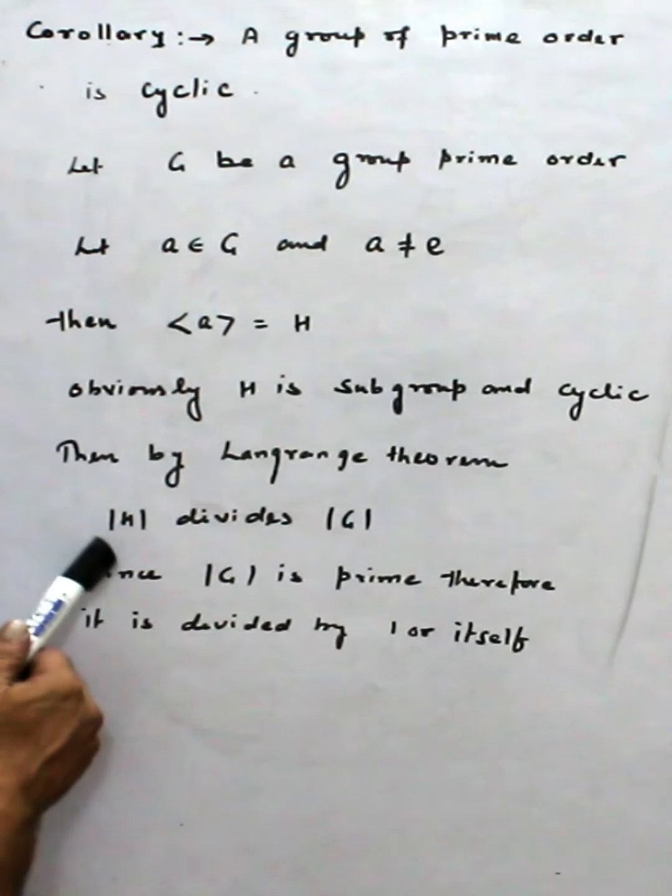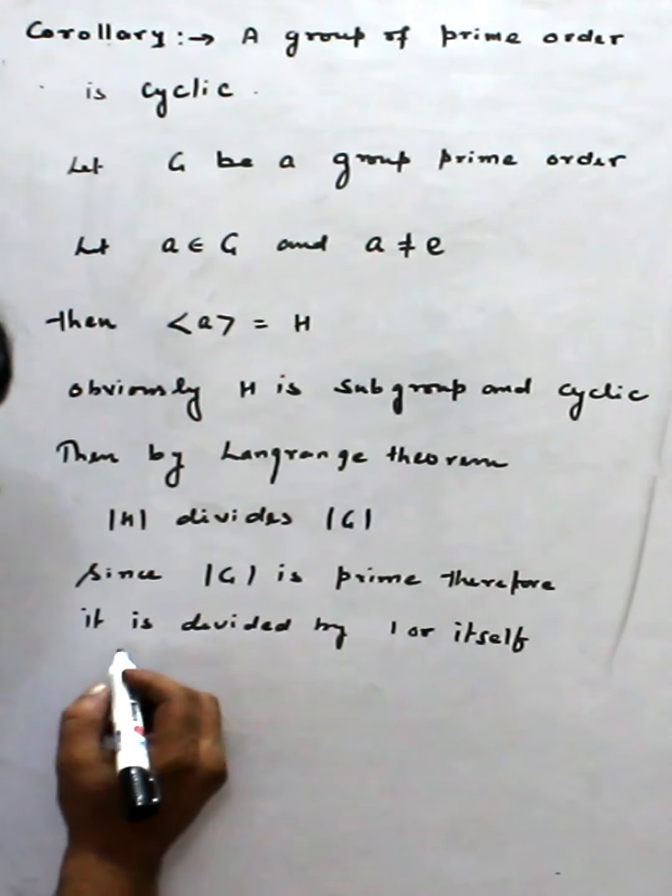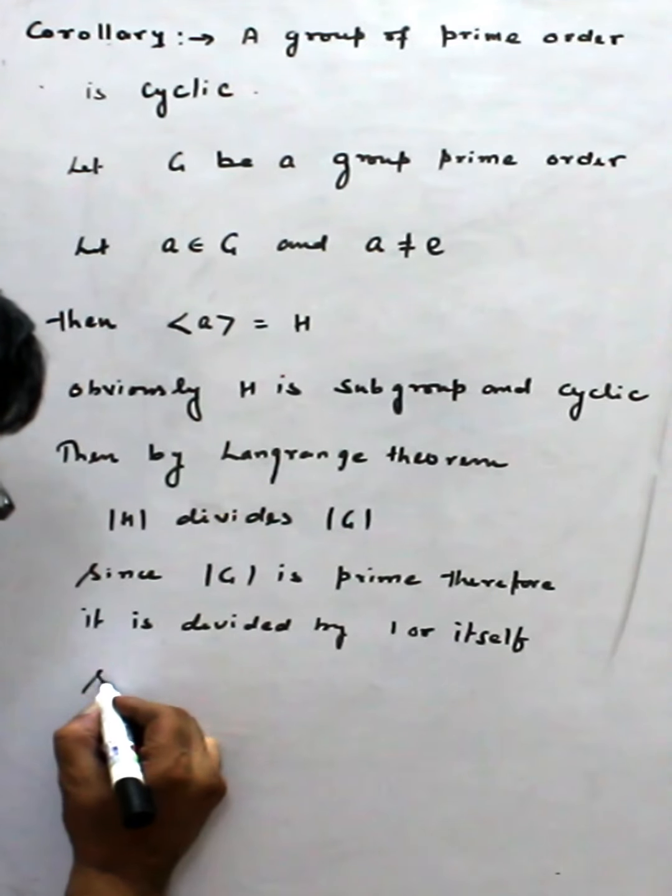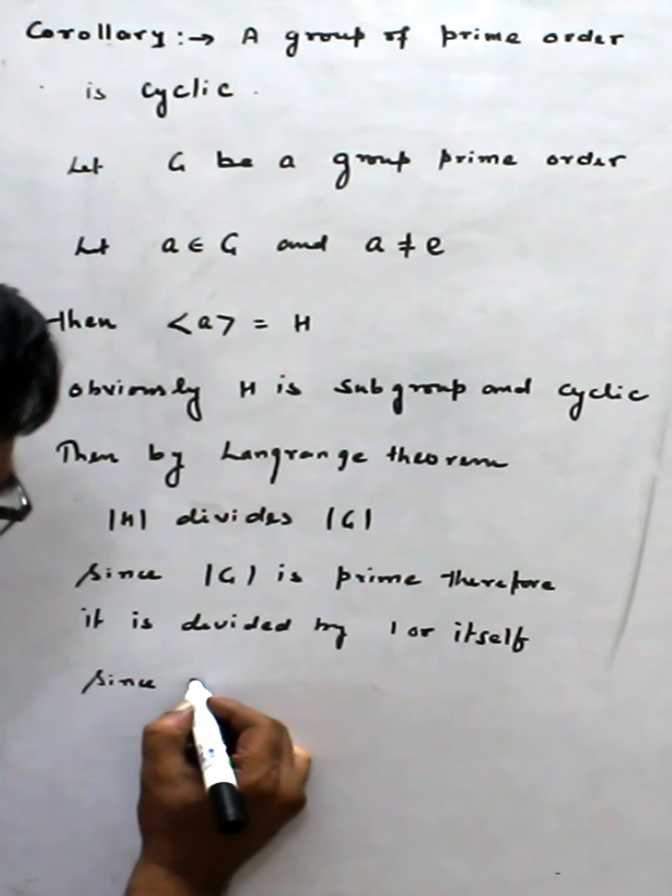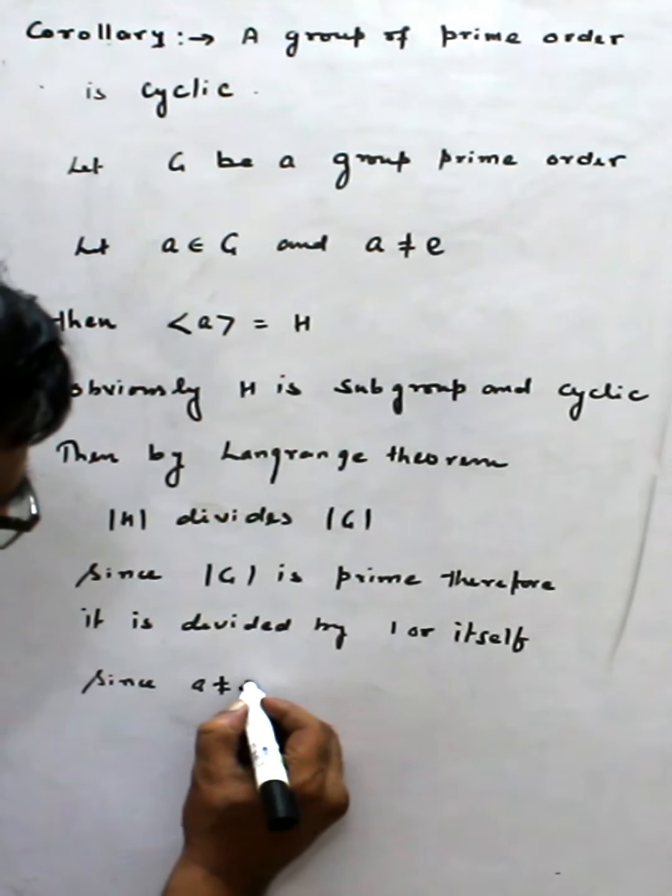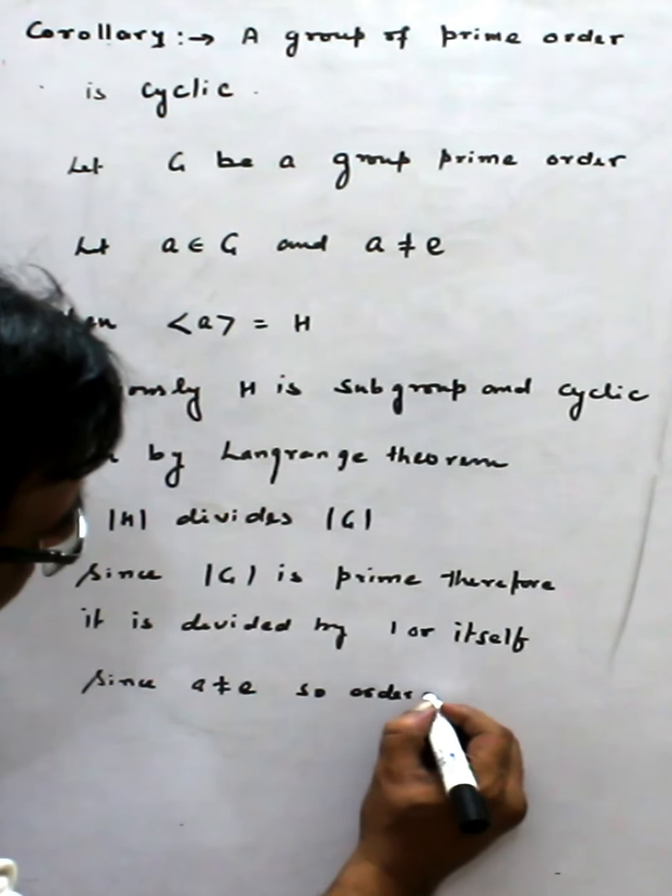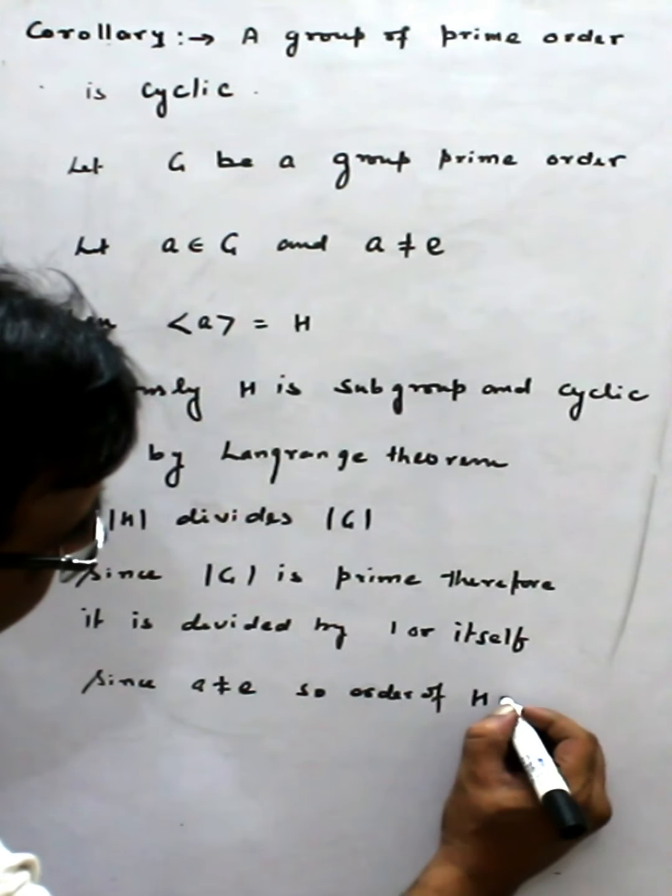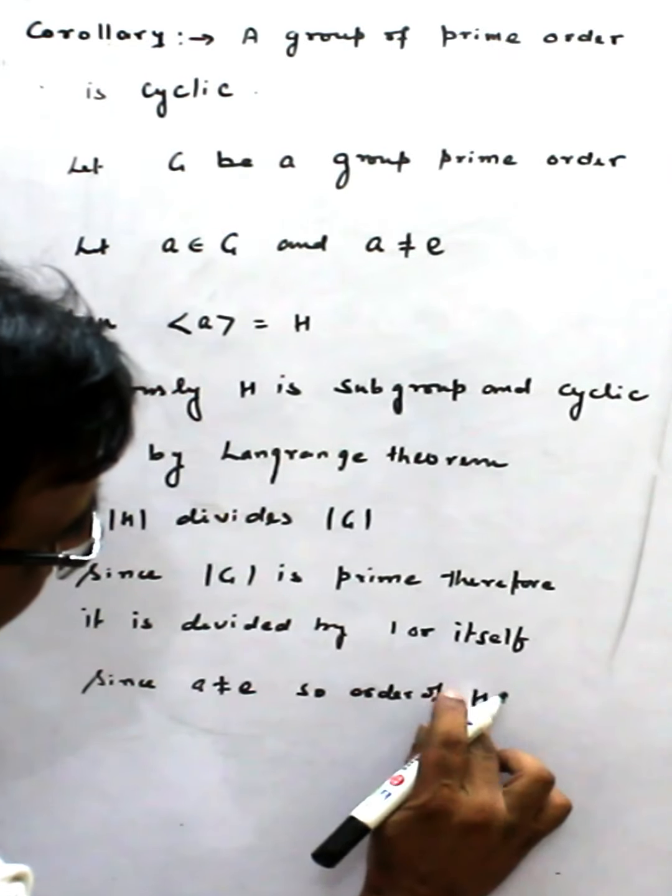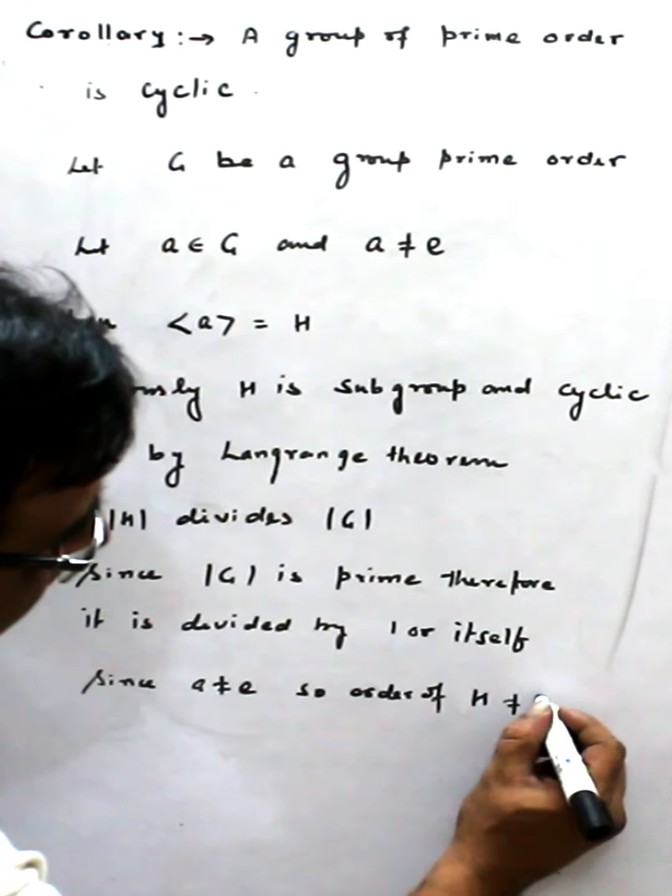Obviously H is not one. Since A is not identity, order of H is not one.